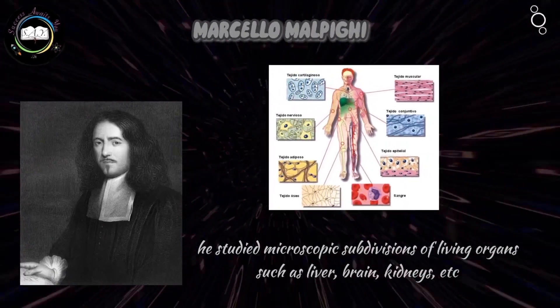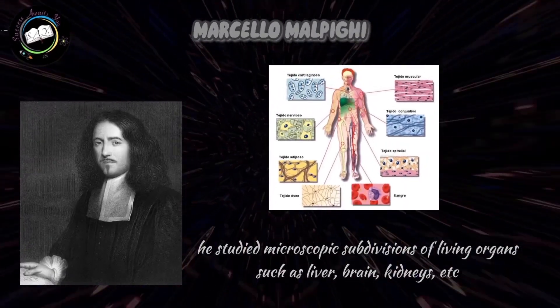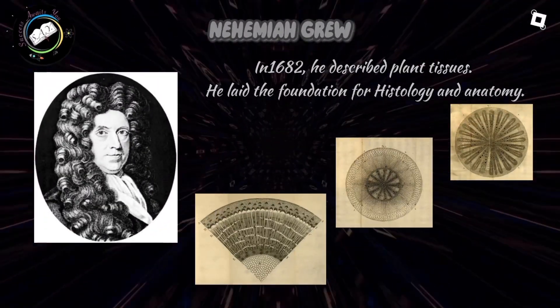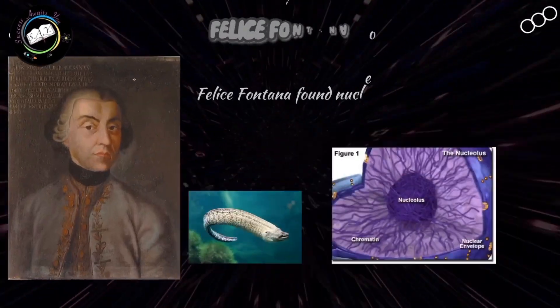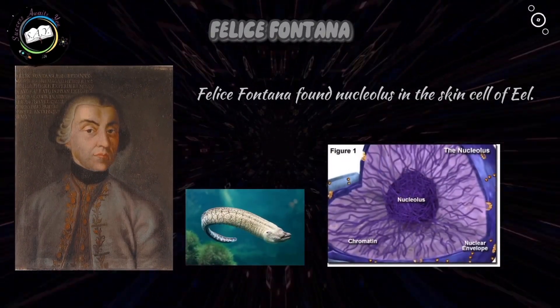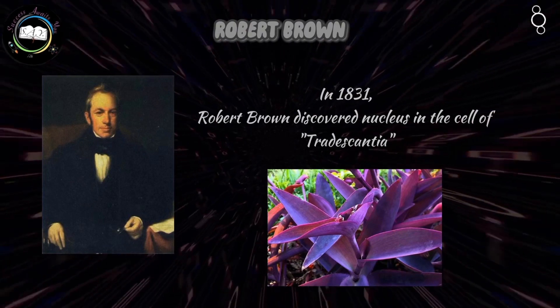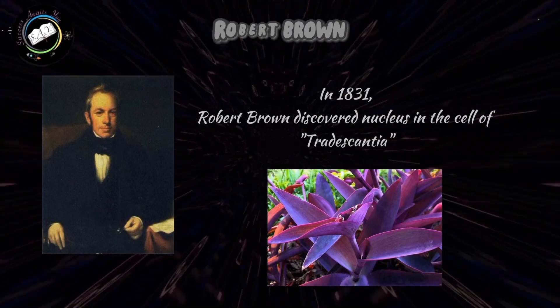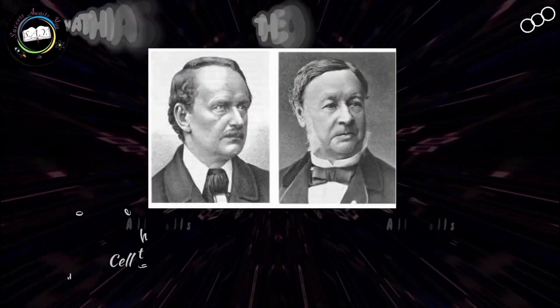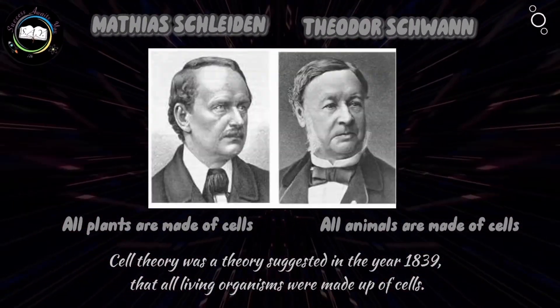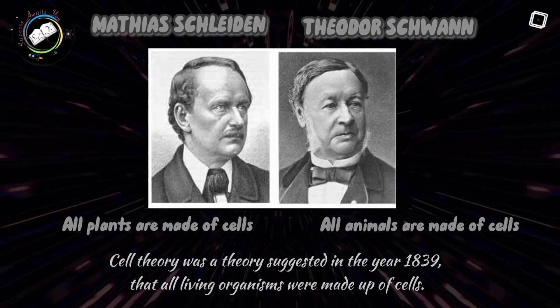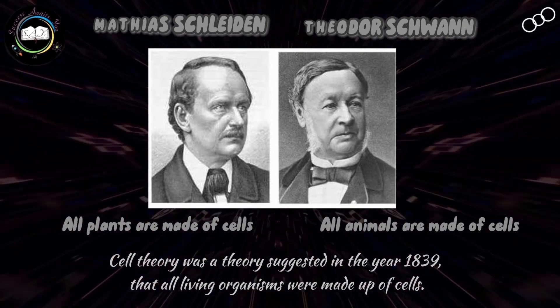Marcello studied animal tissues under a microscope. Nehemiah Grew described plant tissues. Fontana found the nucleolus in the skin cell of an eel. Robert Brown discovered the nucleus. However, Schwann and Schleiden studied animals' and plants' tissues, respectively, and proposed the cell theory.